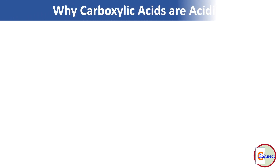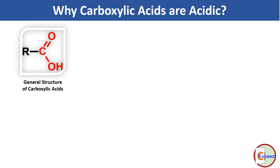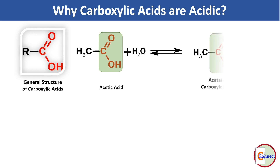Firstly, we have to ask ourselves why carboxylic acids are acidic in nature. Let's see the general structure of carboxylic acids — this is RCOOH. We can take an example of carboxylic acid as acetic acid. When we dissolve acetic acid in water, it dissociates into acetate ion or carboxylate ion and liberates a proton. That is why it is an acid. This is a reversible reaction.